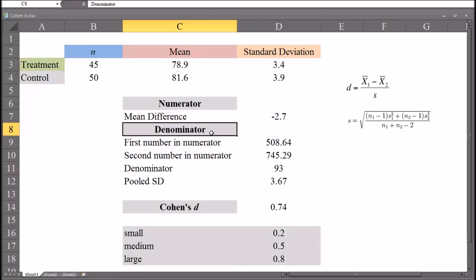Now let's look at the denominator. I'm going to break this down into different steps. We'll look at the first number in the numerator. This is the numerator of the denominator. The second number in the numerator of the denominator. The denominator in the denominator for a pooled standard deviation. And then of course the pooled standard deviation.